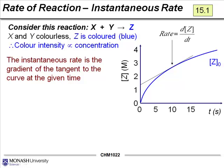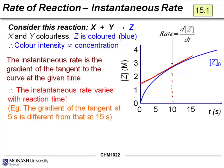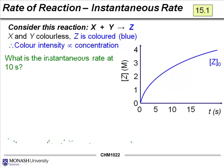You can see that if we take the tangent to the curve at any point, that will give us the instantaneous rate at that very point in time. The instantaneous rate is the gradient of the tangent to the curve. We've got an example of the tangent to the curve here, drawn at 10 seconds. What is the instantaneous rate at 10 seconds? It's halfway between 5 seconds and 15 seconds, for which we worked out the average rate.